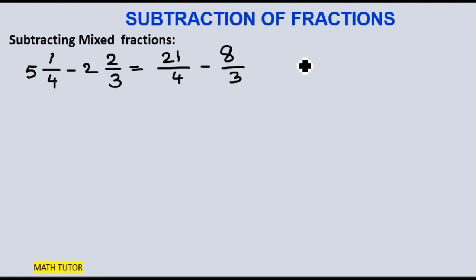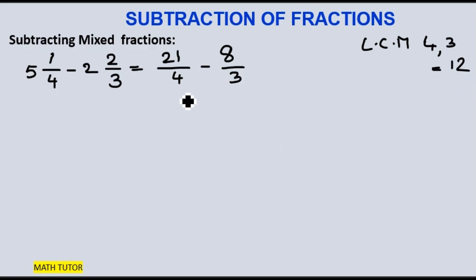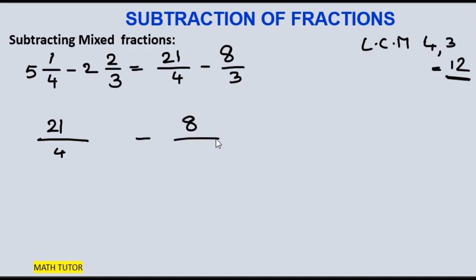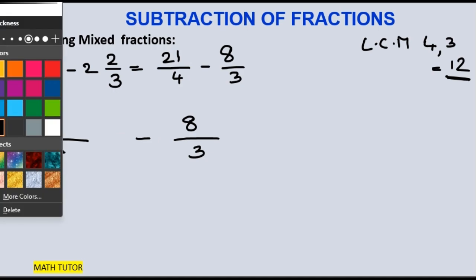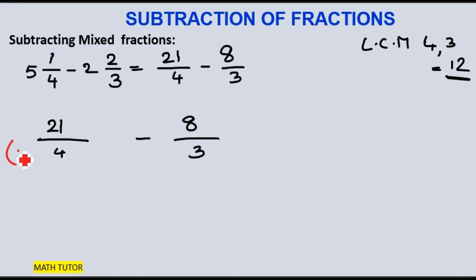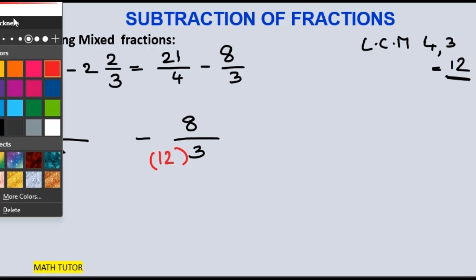Now the first step in subtraction is to find the LCM. What will be the LCM of 3 and 4? That is 12. The new denominator should be 12. Let me write the fractions as they are: 21 by 4 minus 8 by 3, and the new denominator is the LCM, which is 12.